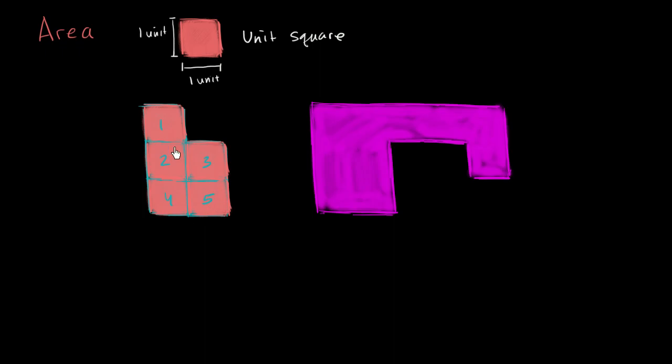So we have five unit squares. And so we could say that this figure right over here has an area. The area is five. We could say five unit squares. The more typical way of saying it is that you have five square units. That's the area over here.